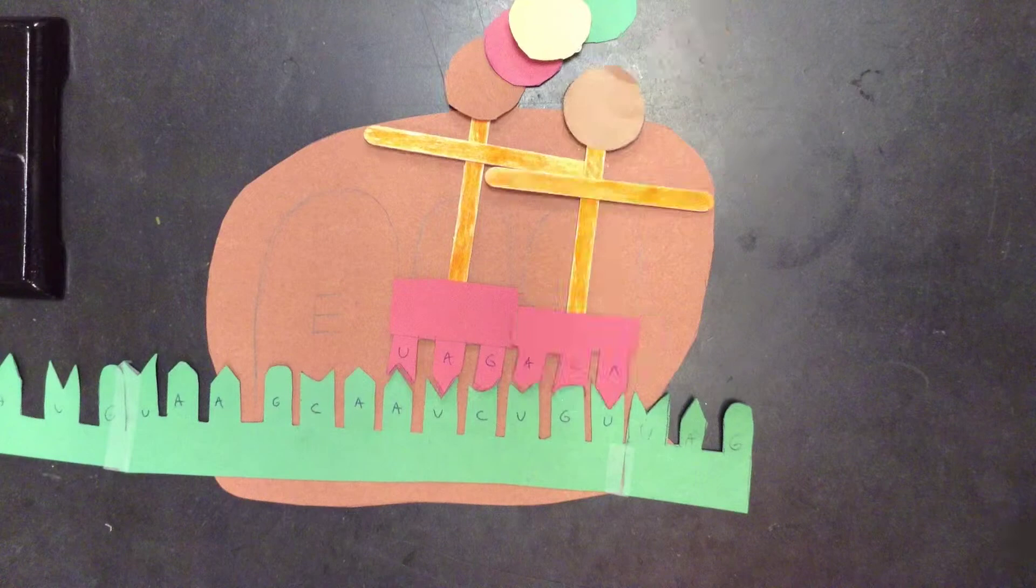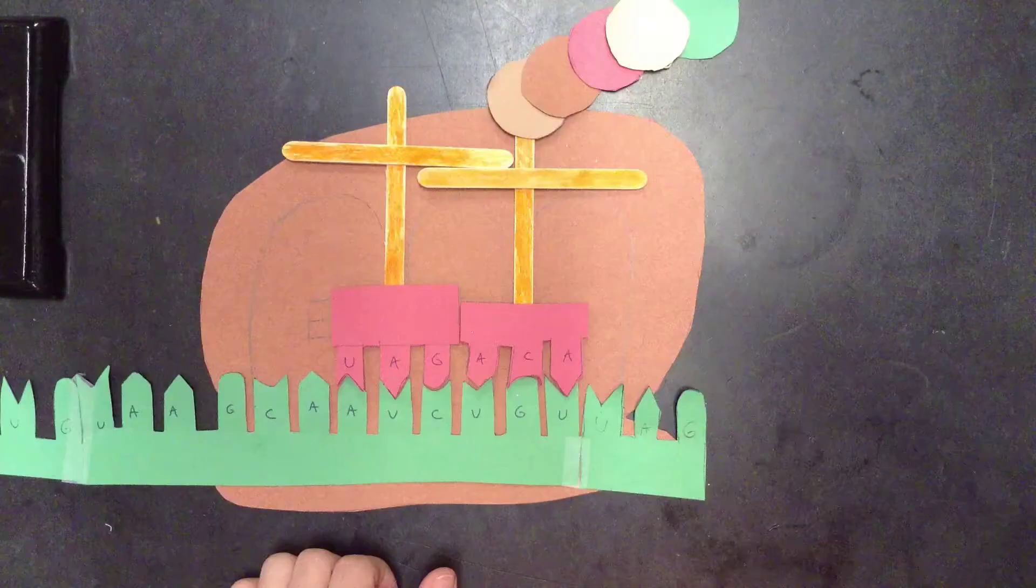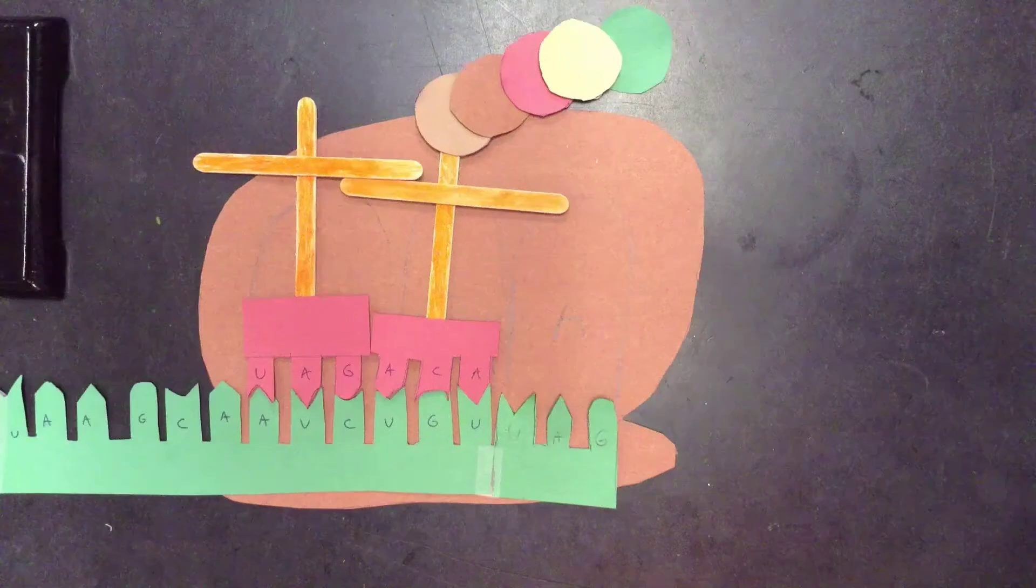The polypeptide chain is passed on to the next tRNA molecule until finally, on the mRNA molecule, there's a stop codon, as you can see here.